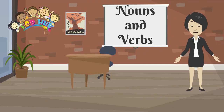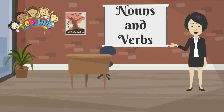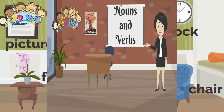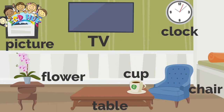There are many, many words to name the things that are around us. Anything you can touch, see, hold, or feel is a noun — a type of noun called a concrete noun.